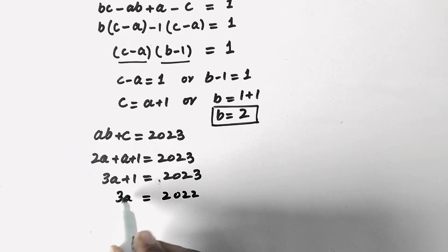And since we have to find the value of A, we will eliminate this 3. Then to eliminate this 3, we will divide both sides by 3. So here the value of A will be equal to, when we divide 2022 by 3, it will be equal to 674.